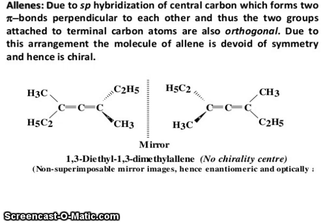Is known as allene. Now for an allene to be chiral, it is necessary that the two groups on each terminal position are different: carbon double bond carbon, double bond carbon.